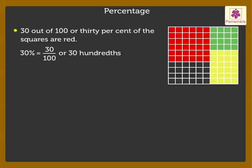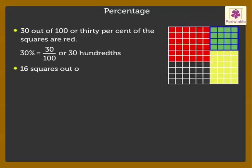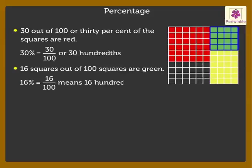Further, 16 squares out of 100 squares are green. It means 16% of the squares are green. 16% is equal to 16 upon 100, means 16 hundredths.